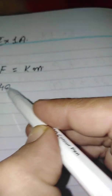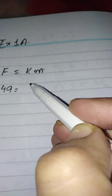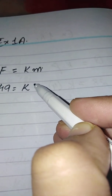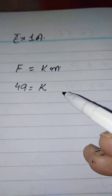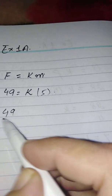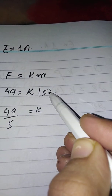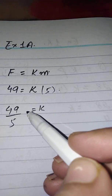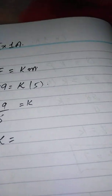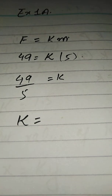The force is 49 and you have to find the value of K. Move the 5 to the other side — since it is multiplying, when it comes to this side it will divide. So the value of K is 9.8.